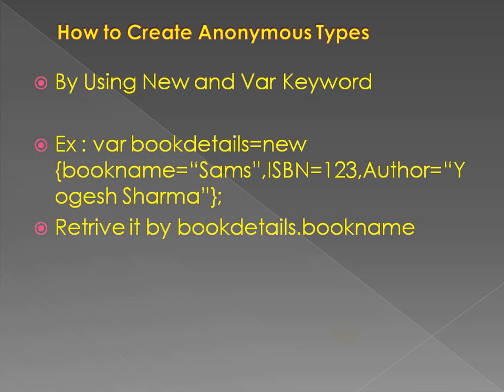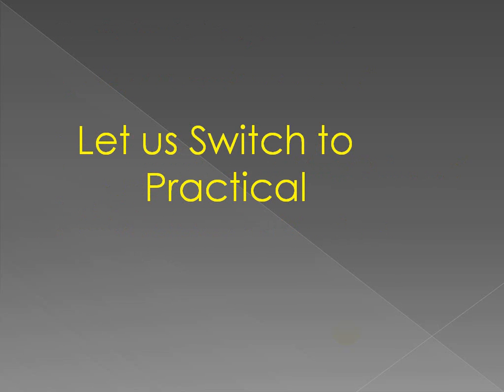Properties are defined in a class using special get and set methods. Let's switch to the practical part — by creating an anonymous type practically in Visual Studio, you will understand it well.